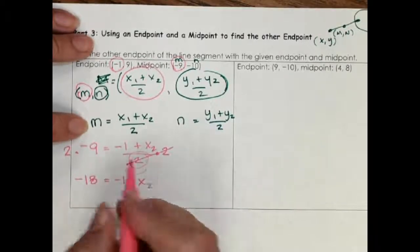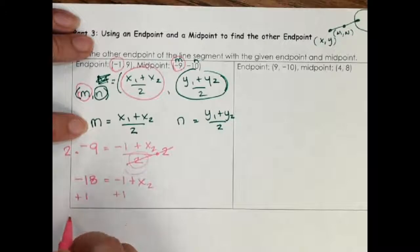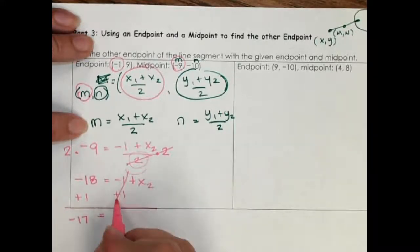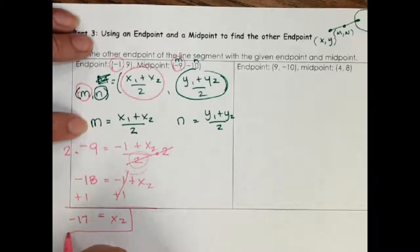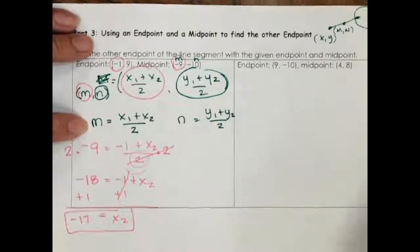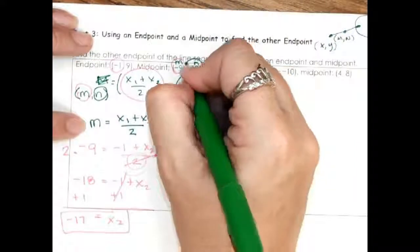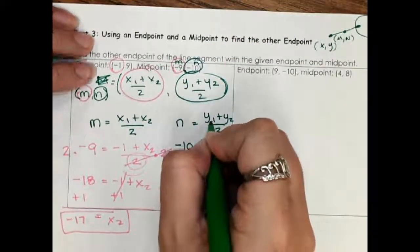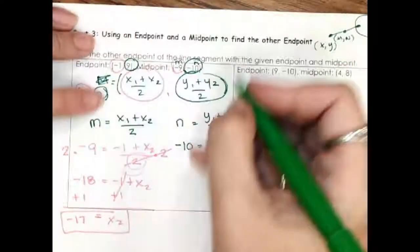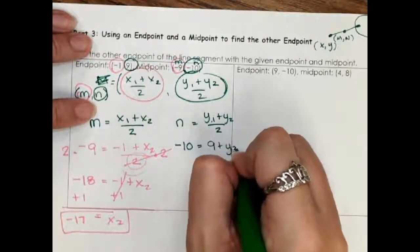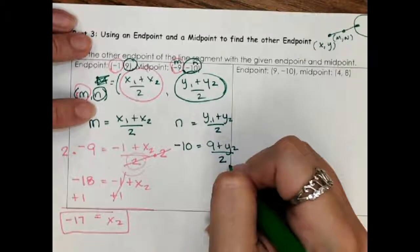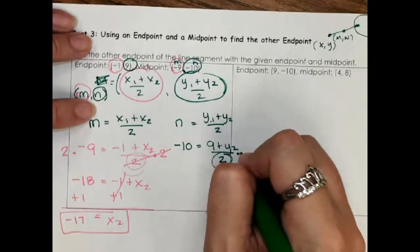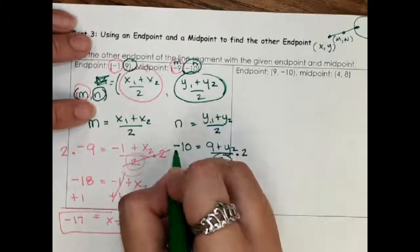Plus this and equals, this cancels. Next, now I'm going to do the same thing on the y side. I take my y's, here's the midpoint, that's my answer. Here's the y I know, I'm looking for the other y. How do I get it out of the bottom? You always multiply what's on bottom on both sides.